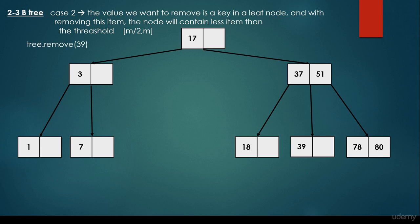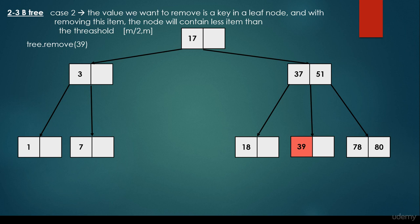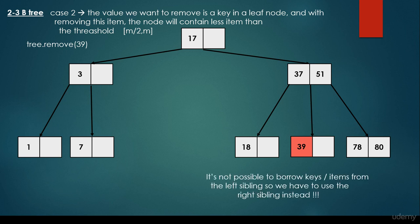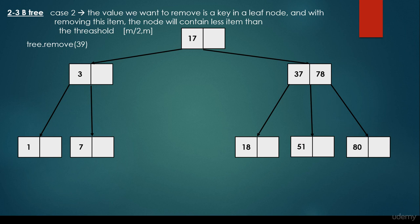What if we would like to remove 39 in a situation where we cannot borrow from the left sibling, because it has only one item and taking it would violate the B-tree properties again? Then we have to take items from the right sibling. It's important that we borrow whenever possible: if we can take from the left sibling we do, otherwise we take from the right sibling. In this case we use the right sibling and make the rotation: 51 is pushed down and 78 is promoted to be the parent.